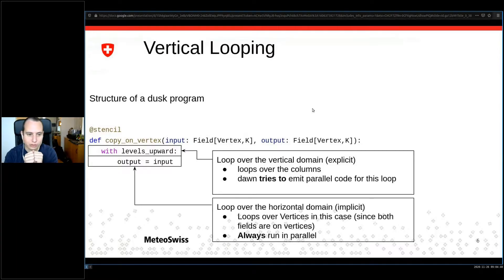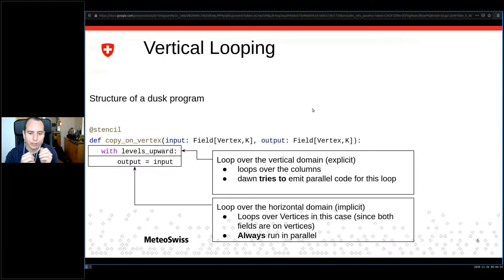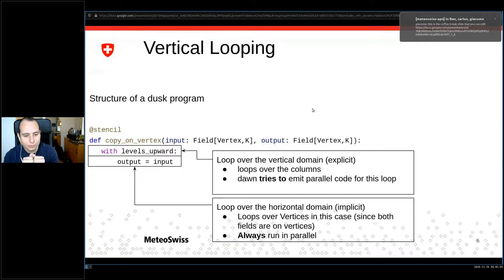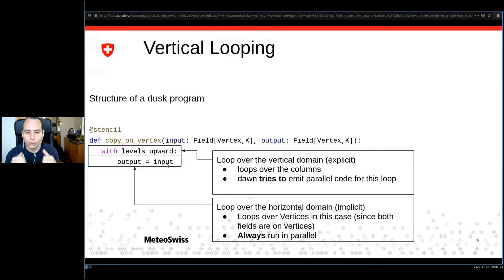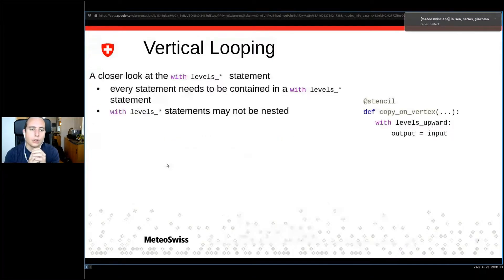Diving in a little more: we have the loop over the vertical listed explicitly — we say we want to go over our levels in upward fashion, and Dawn will try to emit code which runs this in parallel. We'll formalize what 'tries to' means shortly. We also have the list of statements run in parallel. The assignment 'output equals input' is not only a single assignment; it assigns values all over the horizontal domain, and in Dawn the horizontal domain is always parallelized.